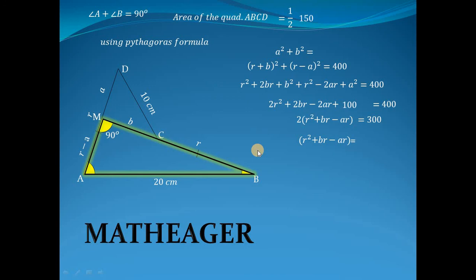Area of quadrilateral ABCD is half into 150, which is 75. And this question is asked in centimeters, so area is 75 centimeters squared. We have defined the area of this whole quadrilateral as 75 centimeter square.